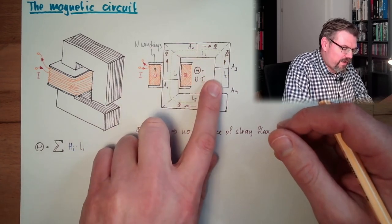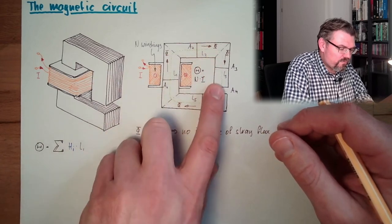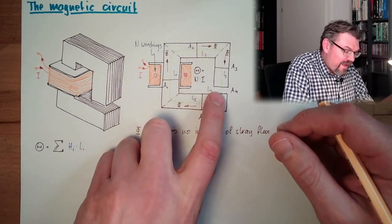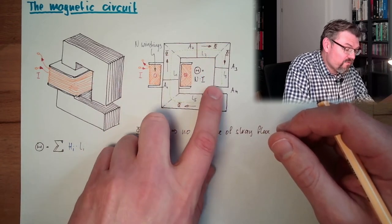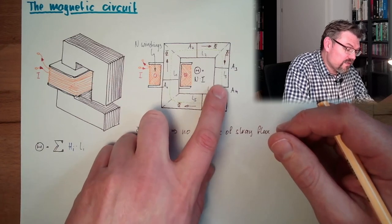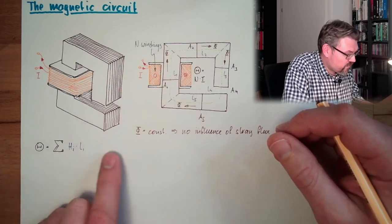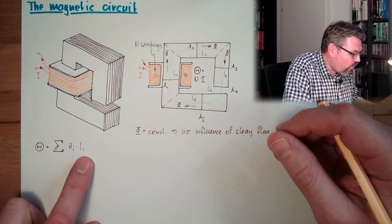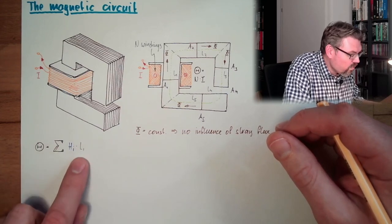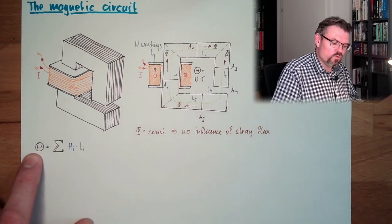H1 multiplied with L1, H2 multiplied by L2 is magnetic force used for this area. H3 multiplied by L3, H4 multiplied by L4, and so on. So here I built the sum of all magnetomotive forces and this must be this durchflutung.